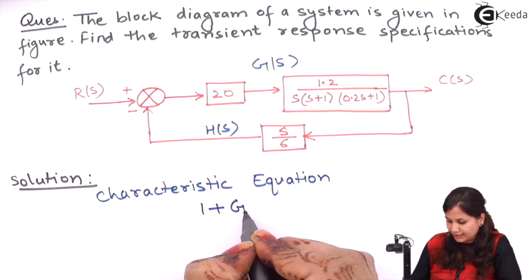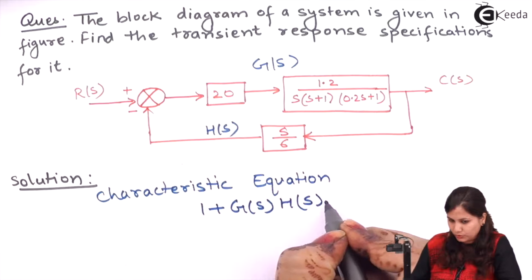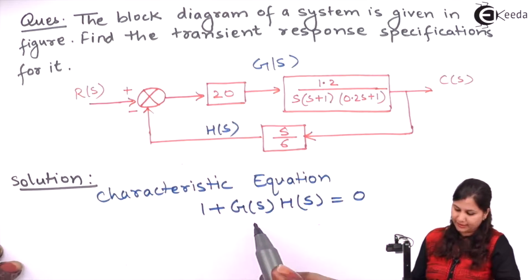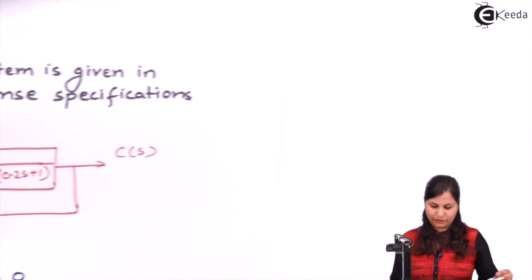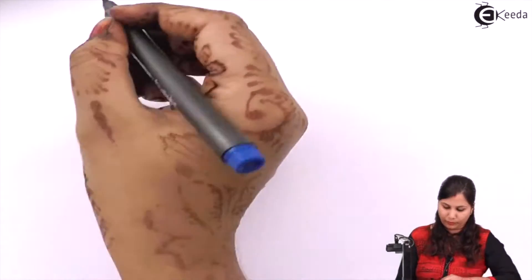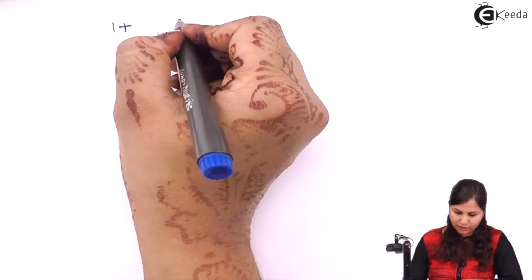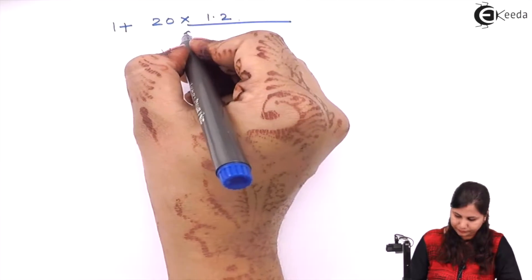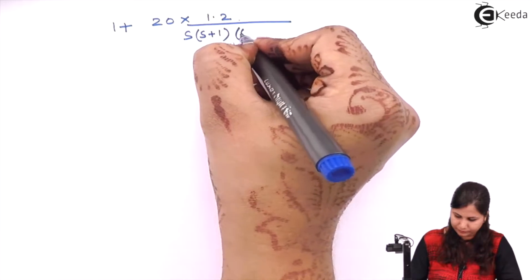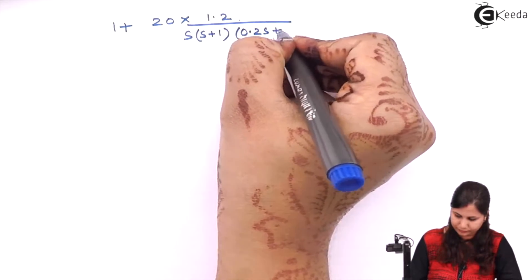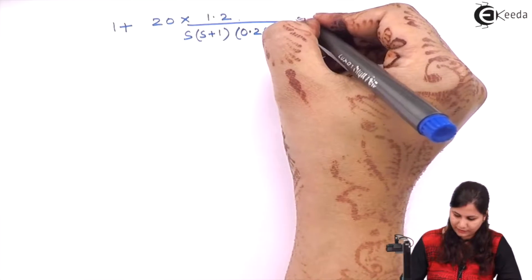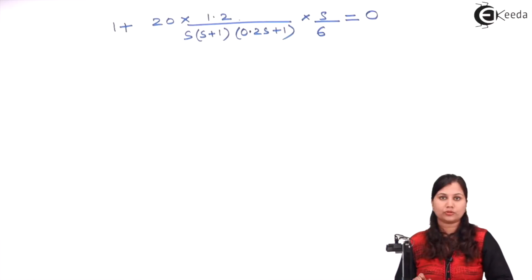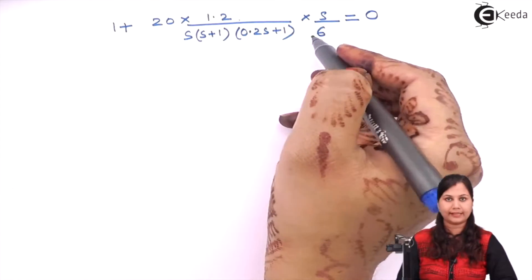The characteristic equation is given by 1 + G(s)H(s) = 0. Substituting the values of G(s) and H(s): we have 1 plus G(s) which is 20 times 1.2, and H(s) which is s/6, equals zero.